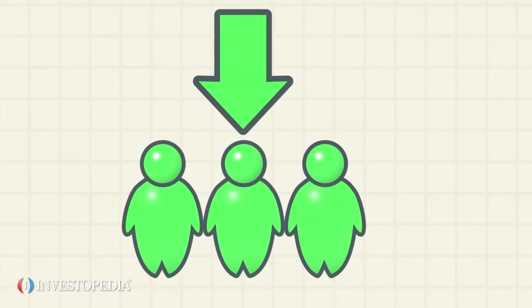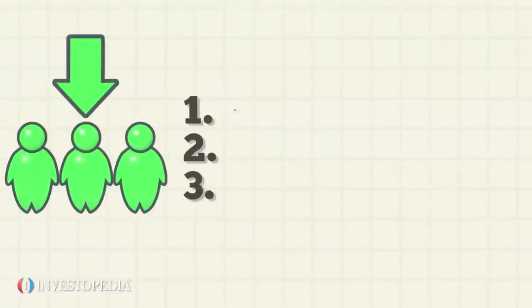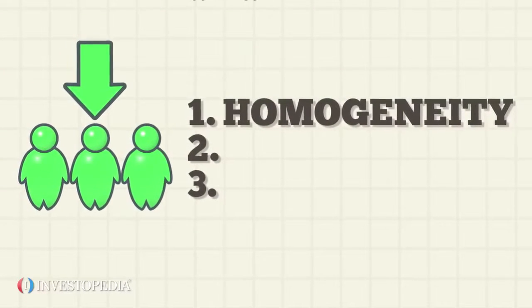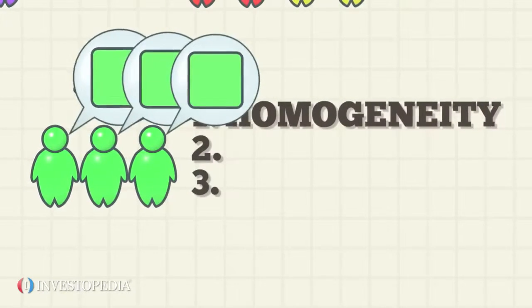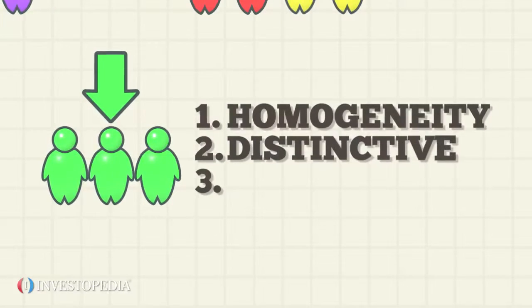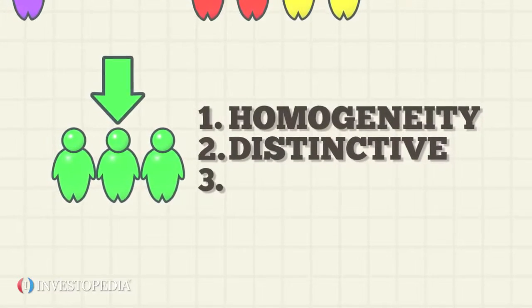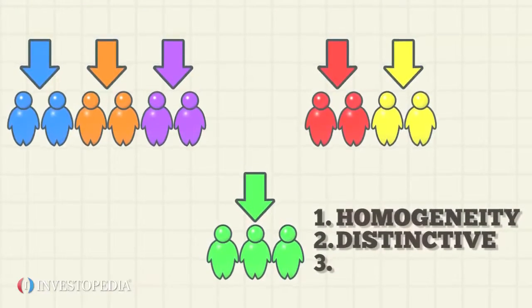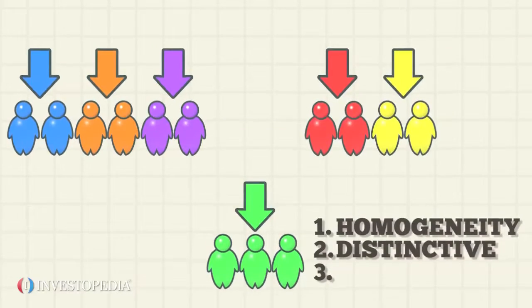A market segment usually features three aspects. The first is homogeneity. The consumers in the segment have common needs. Second, each segment is distinctive. This implies the consumers in the group are different, in some ways, from consumers in other groups.